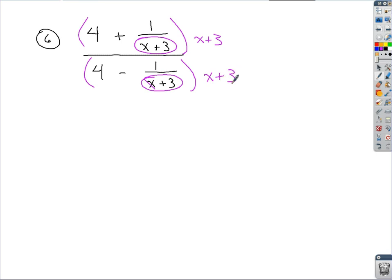If we multiply to both the numerator and denominator by that x plus 3, we're distributing it through to both terms. If you multiply the x plus 3 through, you've got 4 times the quantity of x plus 3.